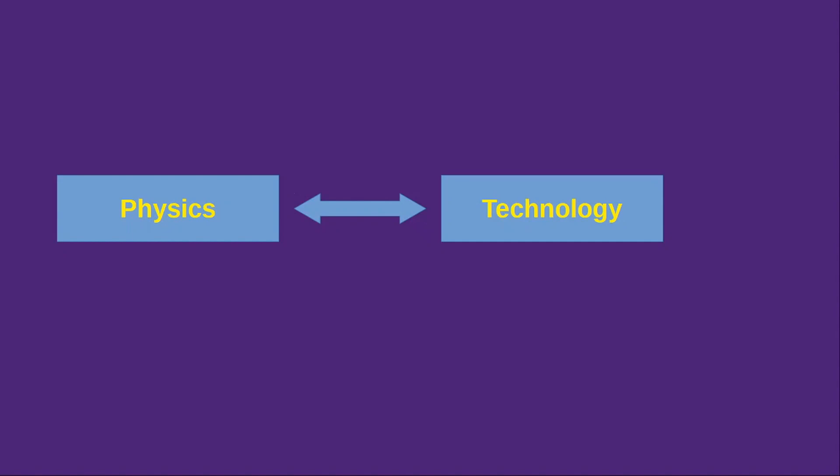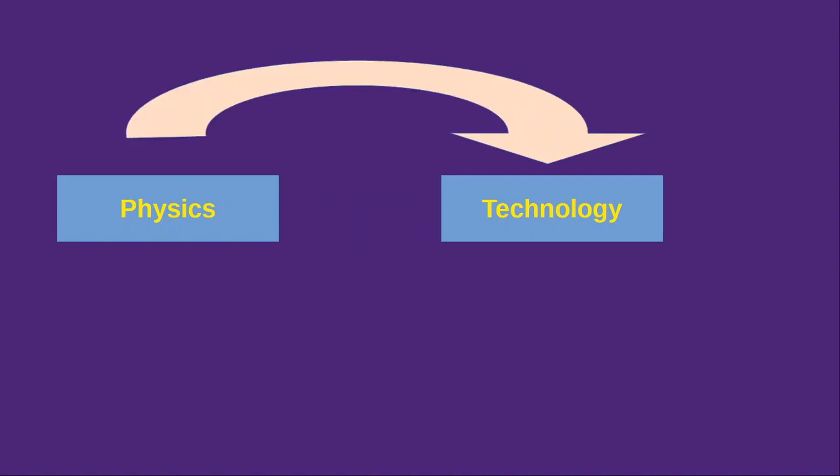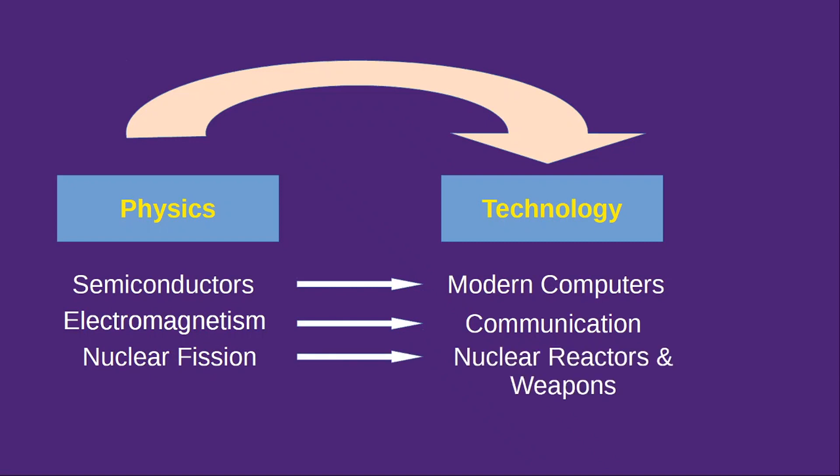So now we are going to see how physics and technology are related and how does it affect our society. The study of physics leads to the invention of new technology like semiconductors, we got modern computers, from electromagnetism, we got the fast communications, from nuclear fission, we got nuclear reactors and nuclear weapons.